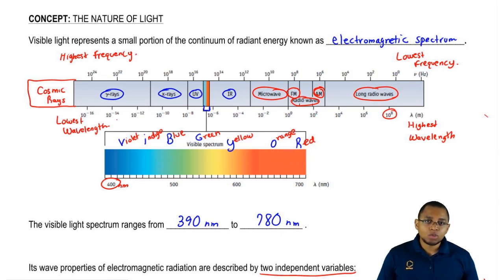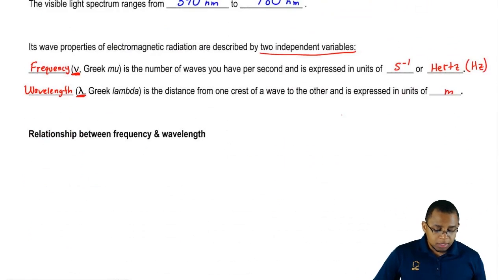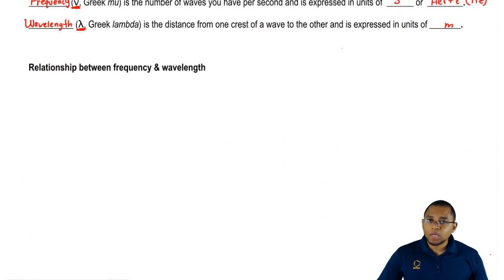Looking at what happens to frequency when wavelength is affected, remember we've talked about this before. The relationship between frequency and wavelength is that they are inversely proportional, which means they're opposites of one another.